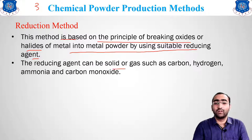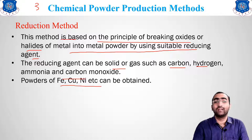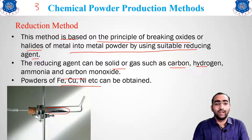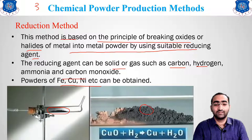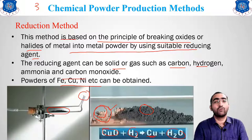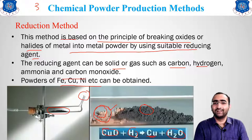The reducing agent can be solid or gas — such as carbon, hydrogen, ammonia, and carbon monoxide. Powders of iron, copper, and nickel can be obtained using this reduction method. For example, with copper: CuO (copper oxide) is reduced with hydrogen, yielding pure copper plus H₂O gas, which escapes. The remaining pure copper is then heated to produce copper powder.